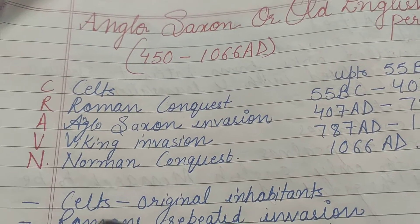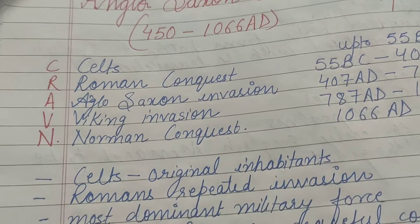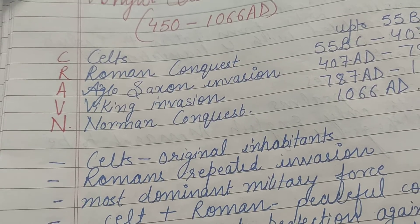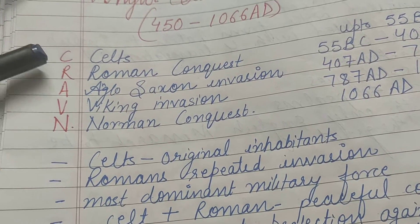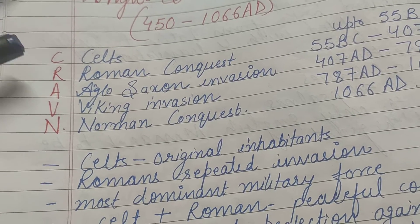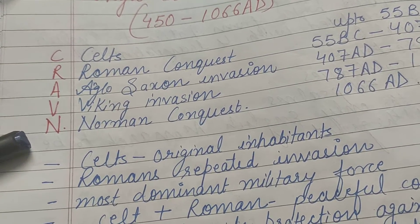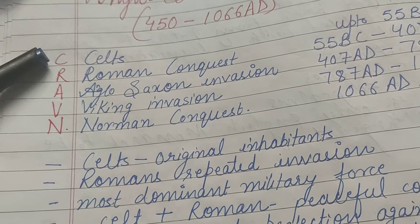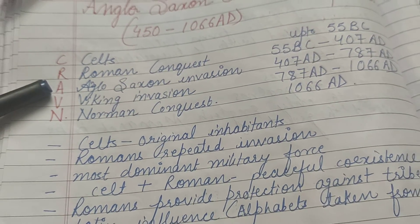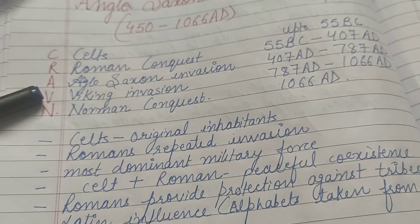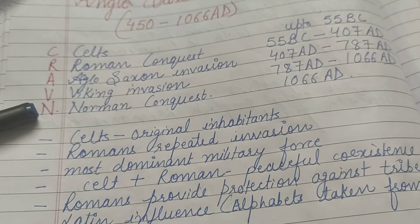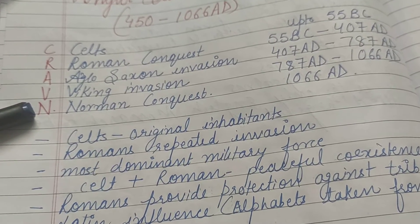Anglo-Saxon period ke historical background ko jaanenge aur isko yaad karne ke liye ek acronym hai CRAVN — C for Celts, R for Roman Conquest, A for Anglo-Saxon Invasion, V for Viking Invasion, and N for Norman Conquest.